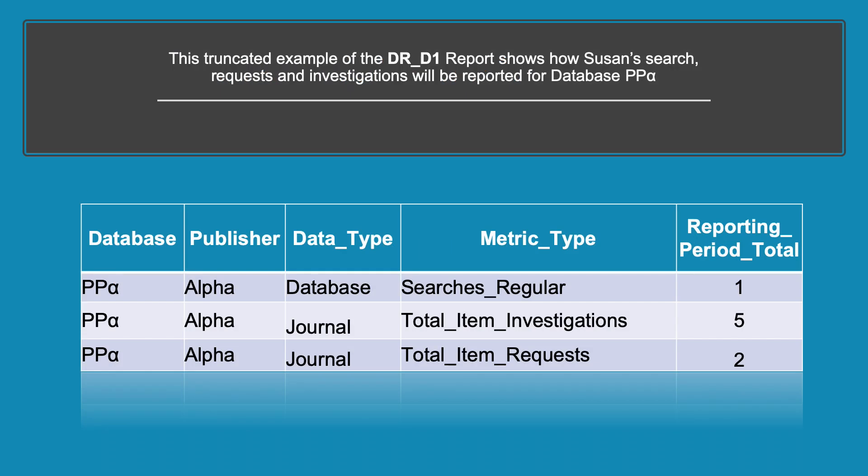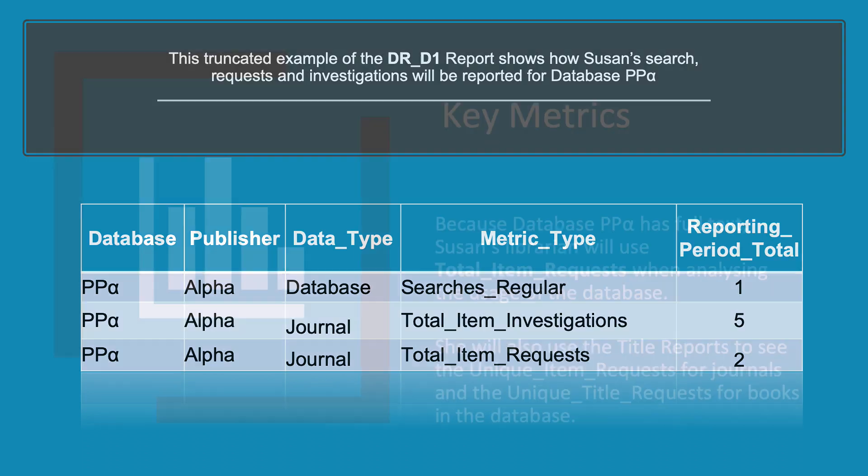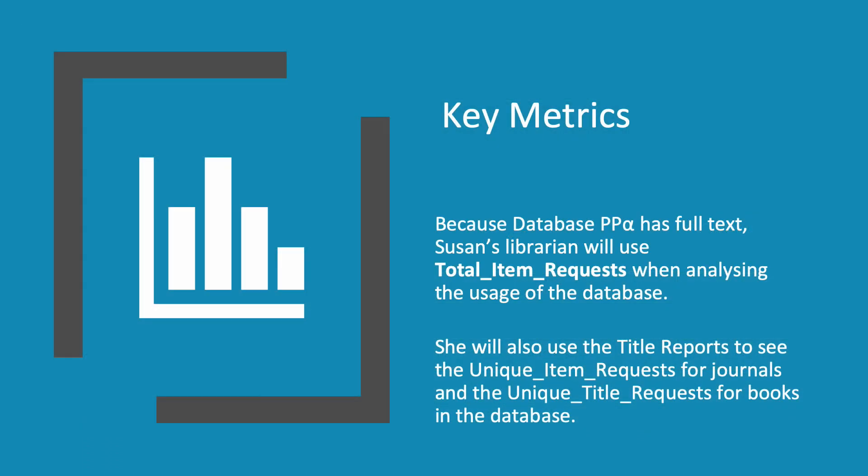This truncated example of the DR-D1 report shows how Susan's search, request, and investigation metrics will be reported for publisher platform Alpha: searches regular 1, total item investigations 5, and total item requests 2. Because the database includes full-text, Susan's librarian should use total item requests when analysing usage of the database. The librarian is also likely to use the title master report and its standard views to see the usage of journals and books in the database.